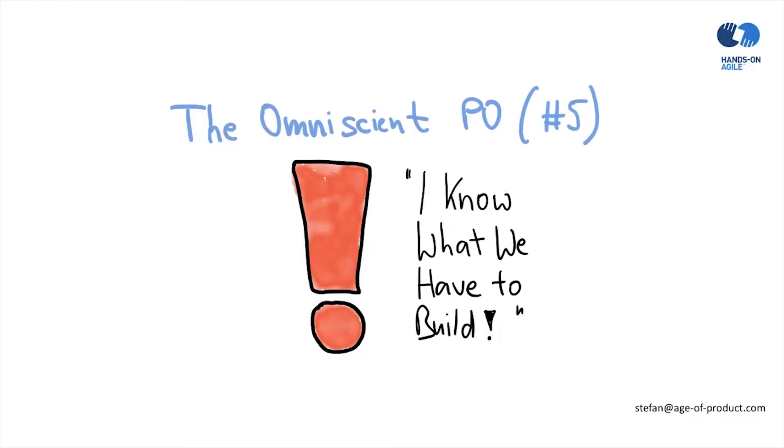If this turns out to be a product owner with a dominant personality, and this is combined with a sort of submissive team, you really create a combination that is not ideal from a scrum perspective because checks and balances are gone.